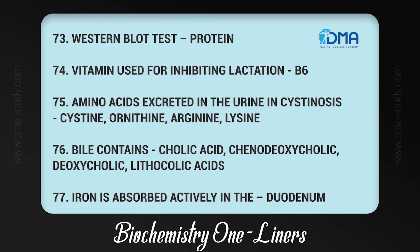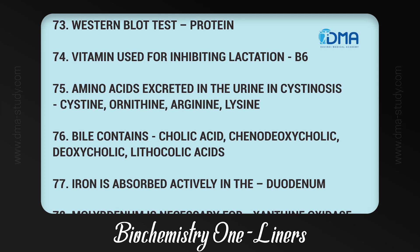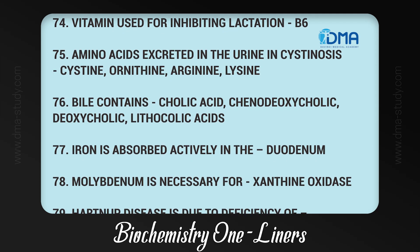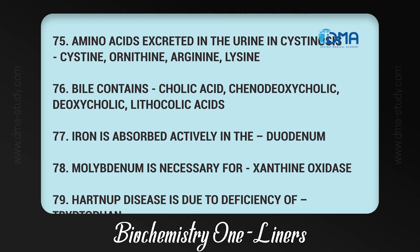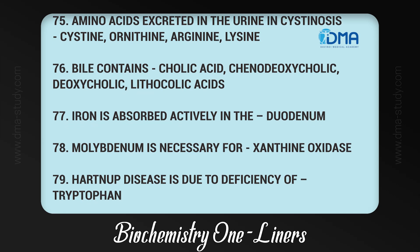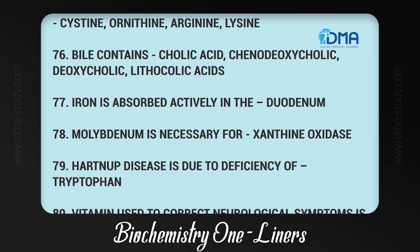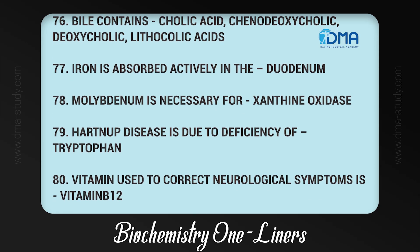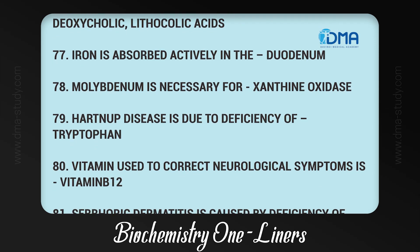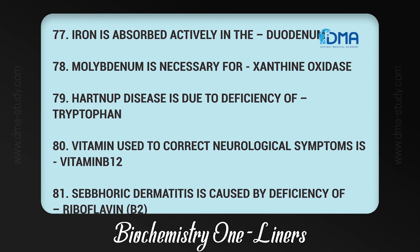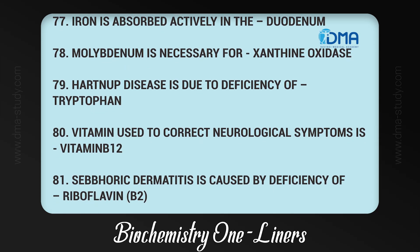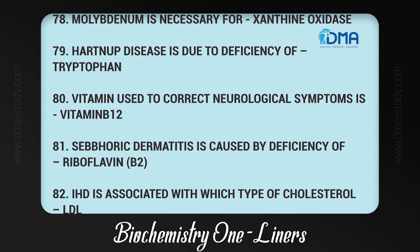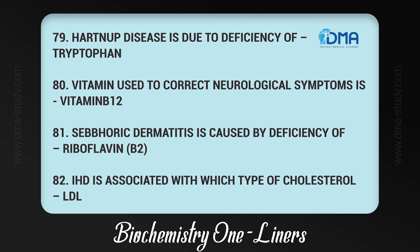76. Bile contains cholic acid, chenodeoxycholic acid, deoxycholic acid, and lithocholic acids. 77. Iron is absorbed actively in the duodenum. 78. Molybdenum is necessary for xanthine oxidase. 79. Hartnup disease is due to deficiency of tryptophan transport. 80. Vitamin used to correct neurological symptoms is vitamin B12.